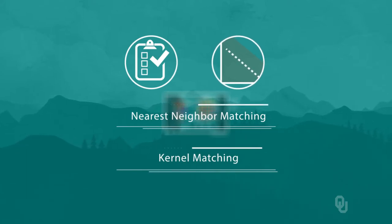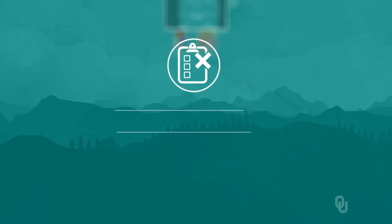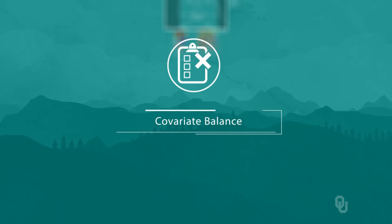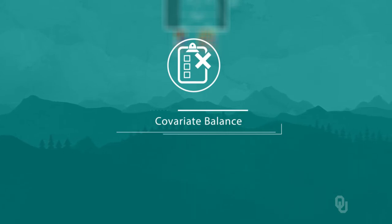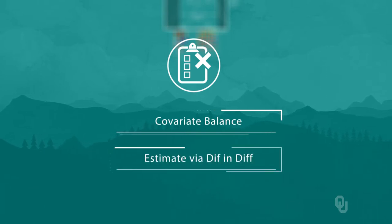So far, so good. The paper's not perfect, though. It doesn't check for covariate balance. Also, it would be possible with their data to estimate the treatment effect via a diff-and-diff, which would control for unobservable time-invariant confounders, but they do not do this either.